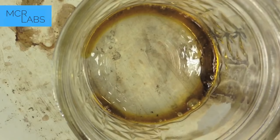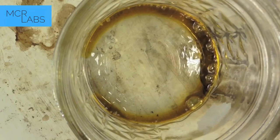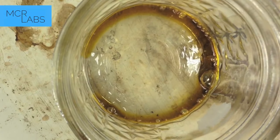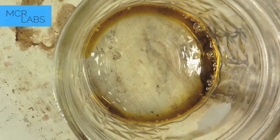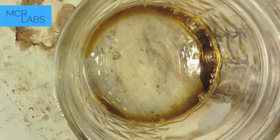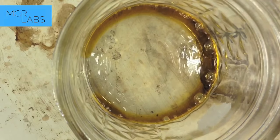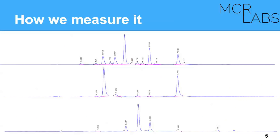What we do is take a sample — whether it's bud, an oil, a decarbed oil like Rick Simpson oil, an edible, or virtually anything — and we aggressively extract all of the cannabinoids from that sample. Then we process it, dilute it, and inject it on our HPLC — high-performance liquid chromatography — which separates all of the cannabinoids from each other.